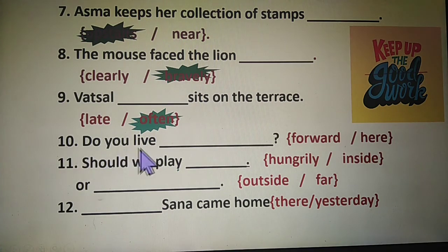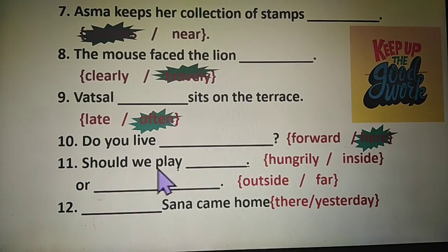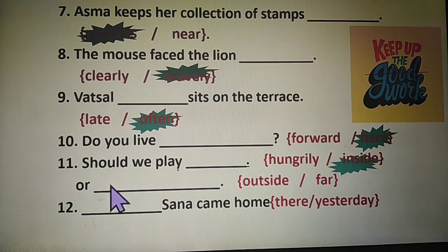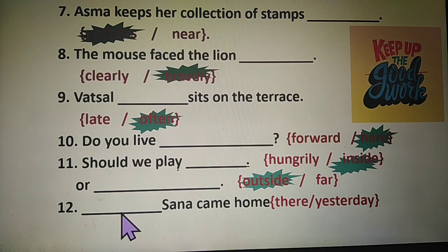The tenth sentence: do you live — forward or here? Do you live here? Eleventh sentence: should we play — inside or outside? Students, there are two blanks in this sentence. Should we play inside or outside? The answer is inside and outside. Should we play inside or outside? The last sentence: yesterday Sana came home. The answer is yesterday — yesterday Sana came home.